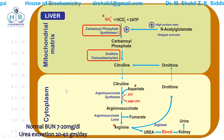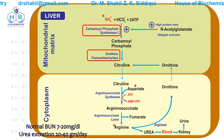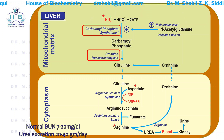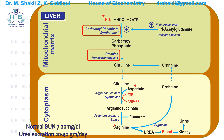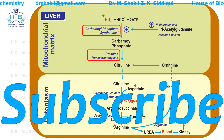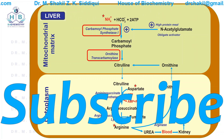Another viva question: What is uremia? Uremia is a raised urea level in the blood. This completes our discussion of the urea cycle. There are other pathologies related to the urea cycle that will be discussed at another time. Remember these important points for your viva, house exams, and MCQs.